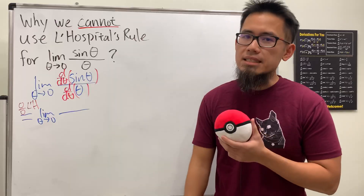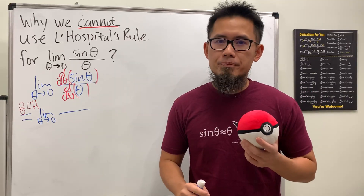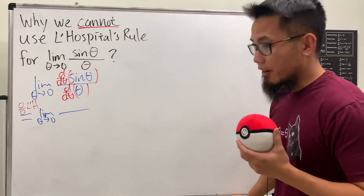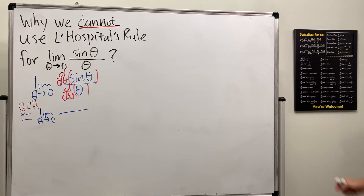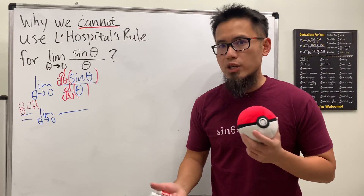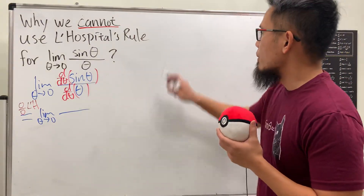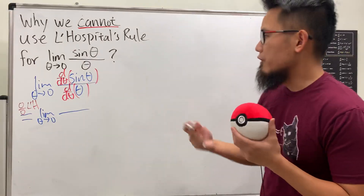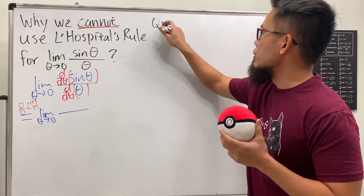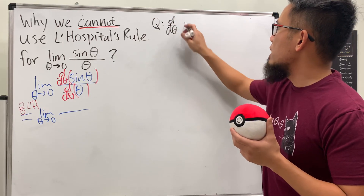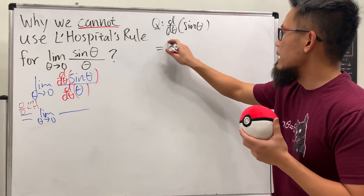You put the limit as theta going to zero and now you have to answer: the derivative of sine is equal to what? Yes, the answer is cosine, but suppose you don't know that. In fact, you will have to go through the definition of derivative — the difference quotient — and work down the limit. So how do we take the derivative of sine theta?